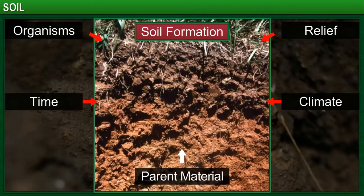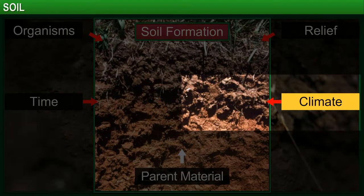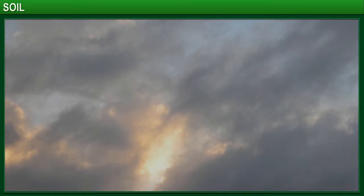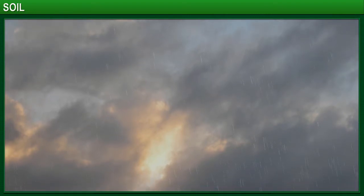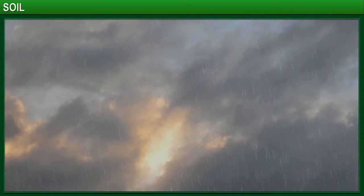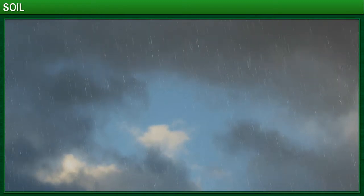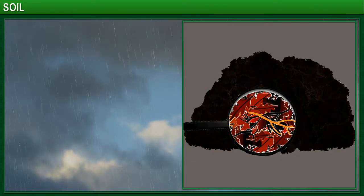The second factor that determines soil formation is climate. Climatic conditions like temperature and rainfall determine the rate of weathering and the formation of humus.